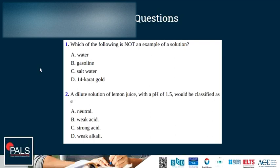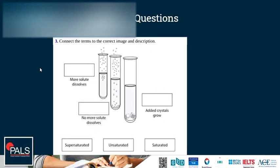A dilute solution of lemon juice with a pH of 1.5 would be classified as a strong acid. Weak acids range from pH 4 to 6.5, so pH 1.5 is a strong acid. Next, connect the terms to the correct image and description. An unsaturated solution is where more solute dissolves; a saturated solution is where no more solute dissolves; and a supersaturated solution is where crystals grow.